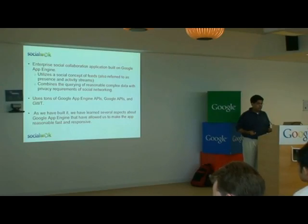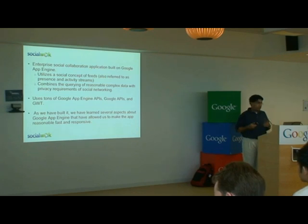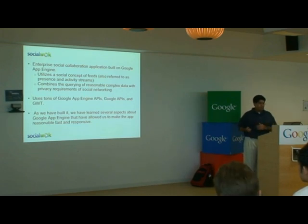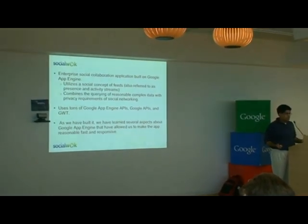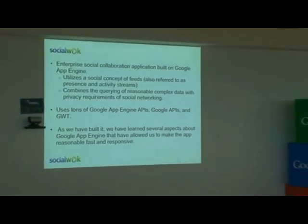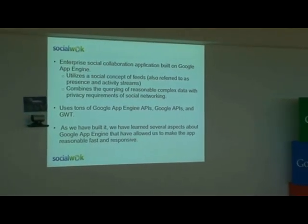If any of you are familiar with Facebook, it's the news feed or the activity stream, or any one of a thousand different synonyms. But this actually presents us with a unique problem in that we have to query reasonably complex data, but also associate that with the privacy requirements of social networking. I only want my status to be seen by my friends, not by everyone on the network.